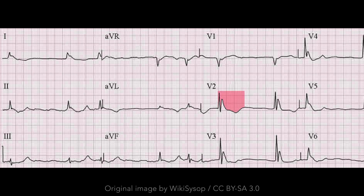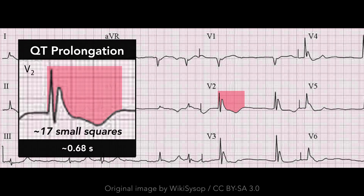Hypothermia can also cause diffuse slowing of impulse conduction. This can lead to prolonged intervals, such as the PR and QT intervals, and widened waveforms, such as the P-waves and QRS complexes. Inspect the QT interval in the ECG — note that it is prolonged.